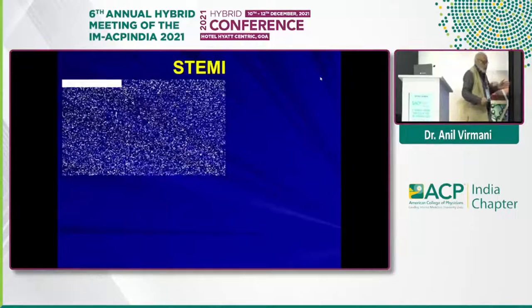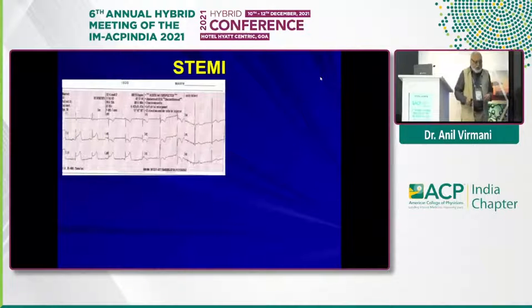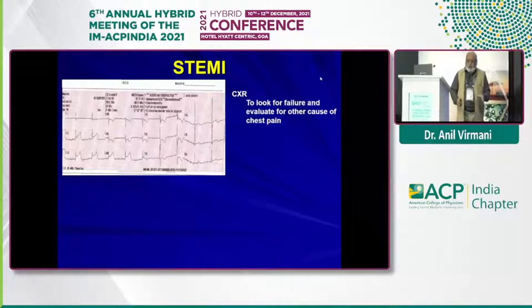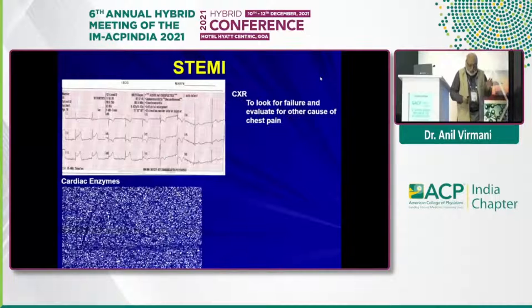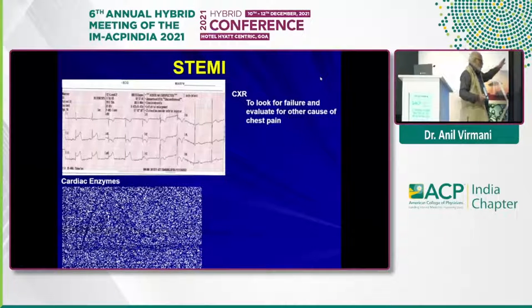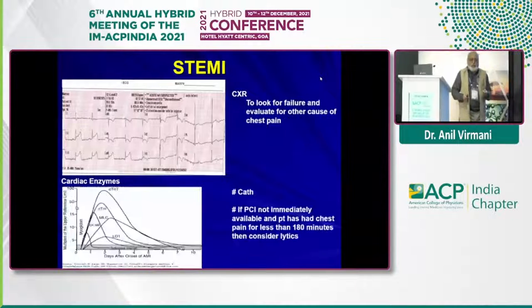Our patient had acute ST elevation in leads II, III, and aVF, which is acute inferior infarction. The treatment is that he should immediately go to the cath lab and a primary PCI should be done. Chest X-ray showed mild congestion, troponin was high. And if PCI is not available, then at least give him thrombolytics.